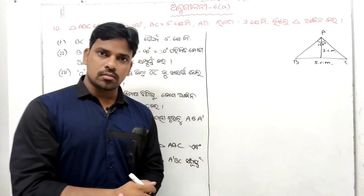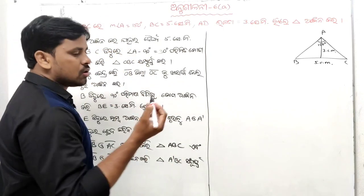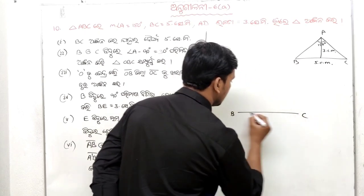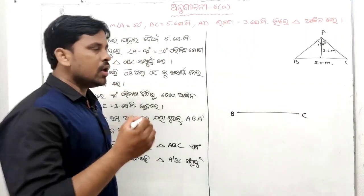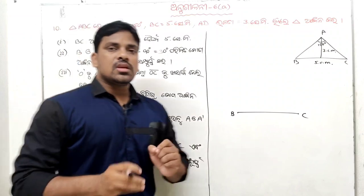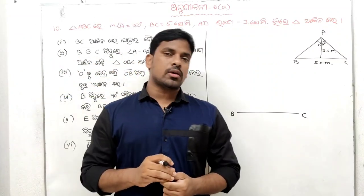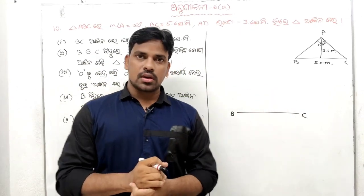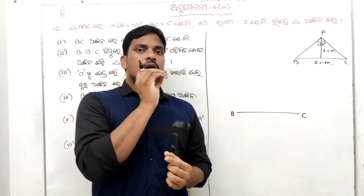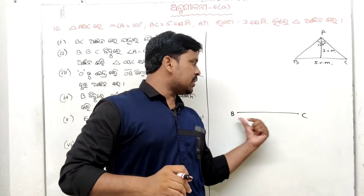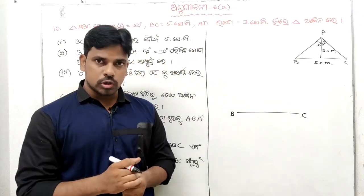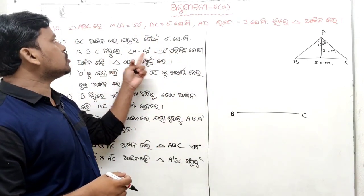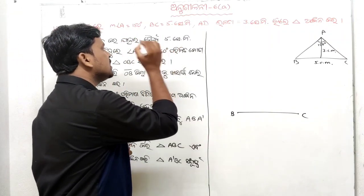Okay, today BC equals 5. A brings B, A brings C. First one, A gives C equals 5. 90 minus theta equals 5. How those are 3 equals? If you have to use this ABC, you can use ABC. 150 minus 90 is 60 degrees.